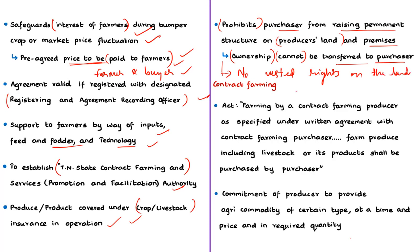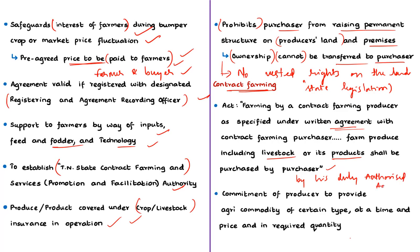Contract farming means farming by a contract farming producer as specified in a written agreement with a contract farming purchaser, in which the agriculture produce including livestock or its products shall be purchased by the contract farming purchaser or his authorized agent. In other words, contract farming refers to farming under formal and informal agreements between producers and processors or buyers.